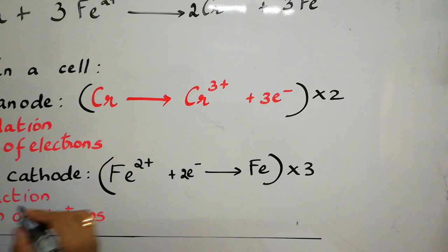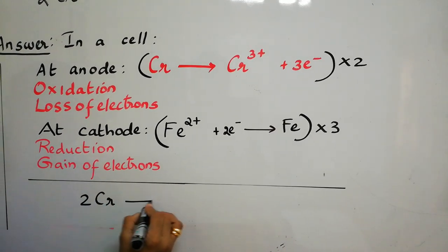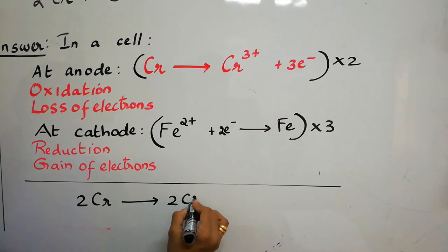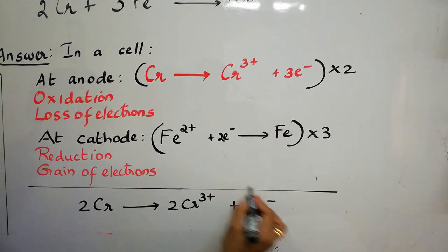So, when you multiply and rewrite, we need to write 2Cr gives 2Cr3 plus plus 6 electrons.